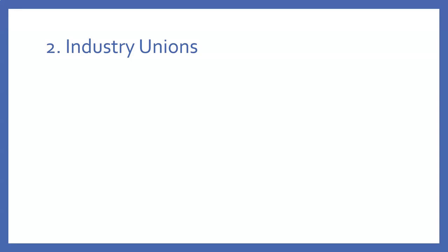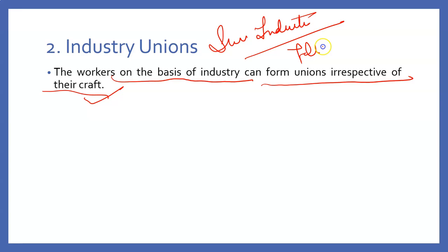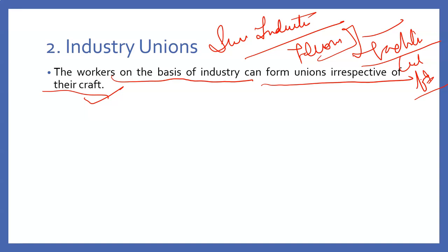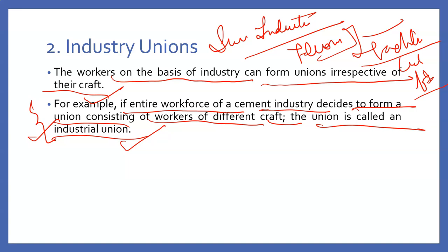Let's talk about the second one, called industrial union. Workers on the basis of industry can form their union irrespective of their craft. In an industrial union, people from the same industry make a union — for example, those working in telecom, textile, or coal fields. If the entire workforce of the cement industry decides to form a union consisting of workers of different crafts, that union is called an industrial union — irrespective of what craft they specialize in.